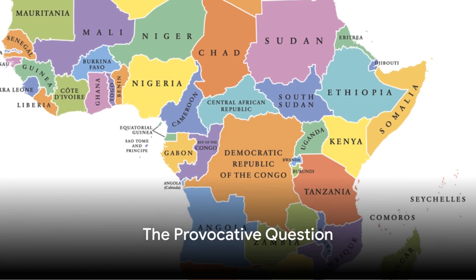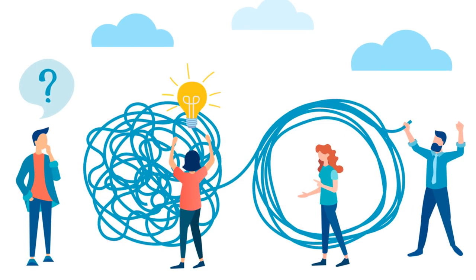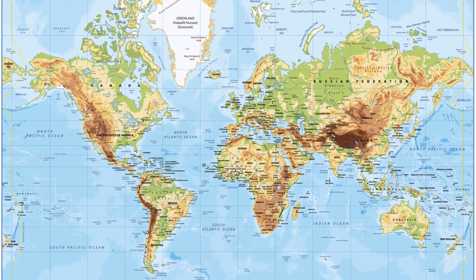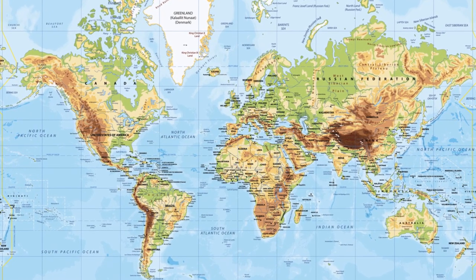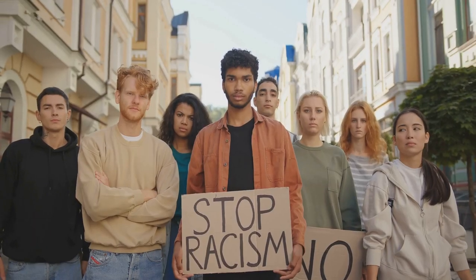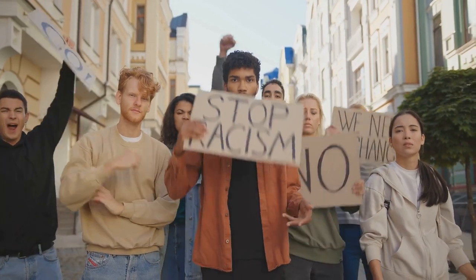Have you ever wondered why we use the term Sub-Saharan Africa? What implications does it carry? We hear this term frequently in global discourse, referring to a vast region of the African continent. But have you ever stopped to think about what lies beneath this geographical label? Does it carry more than just a reference to location? Could there be undertones that link it to racial stereotypes or historical bias?